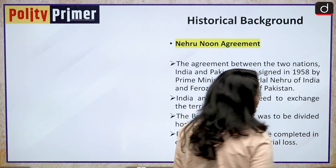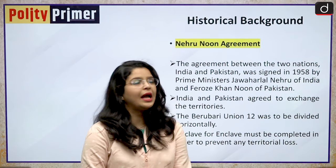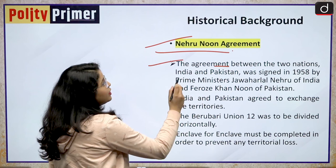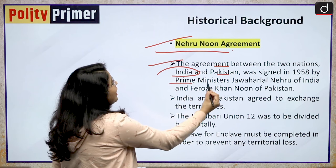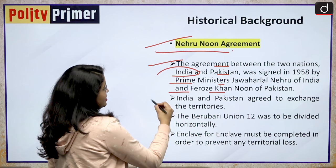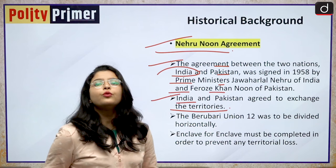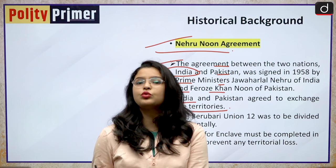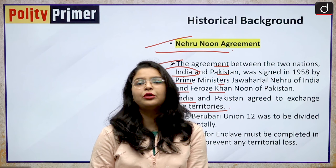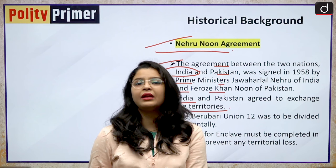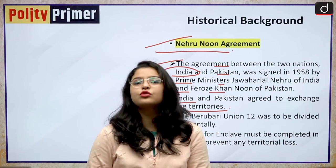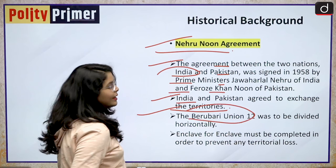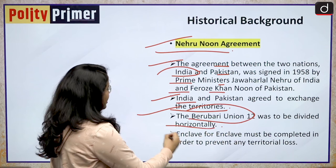If I talk about the historical background behind the enactment of this 9th Constitutional Amendment Act, there was the Nehru-Noon Agreement. The agreement between India and Pakistan was signed in 1958 by Prime Ministers Jawaharlal Nehru of India and Feroze Khan Noon of Pakistan. India and Pakistan agreed to exchange territories. Yes, India is allowed to cede its own territory to a foreign nation. By this 1958 agreement, the government of India was ceding some of its territories to the government of Pakistan.